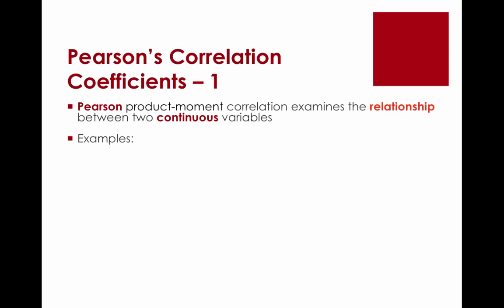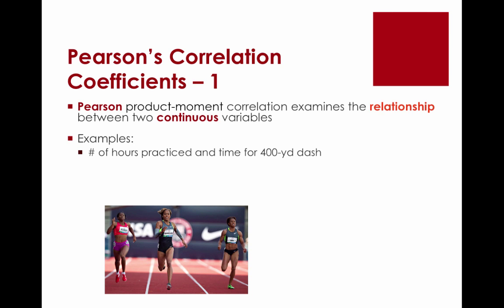Here are a couple of examples. I want to look at the relationship between the number of hours that an athlete practices and how fast they can run the 400-yard dash. Number of hours practiced could be zero hours all the way up to 5,000 or 10,000 hours. The more hours you practice, what do you think is going to happen to someone's time on the 400-yard dash — do you think the time's going to go up or down?